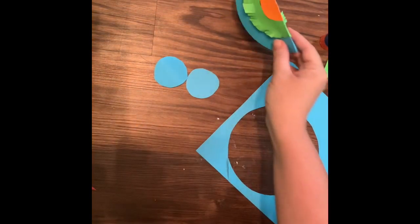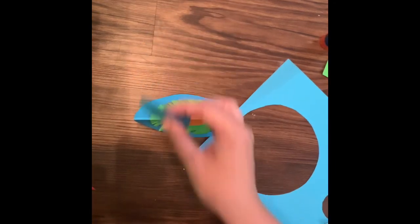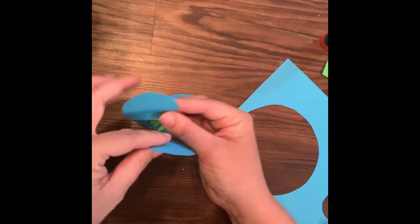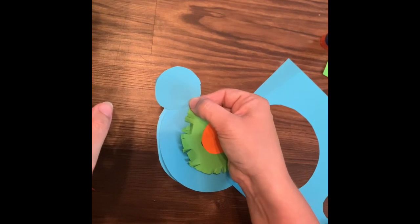Okay, so now we're ready to add the head to our body. So what we're going to do is take the two smaller circles we just made, and we are going to glue them to each side of the body like this.